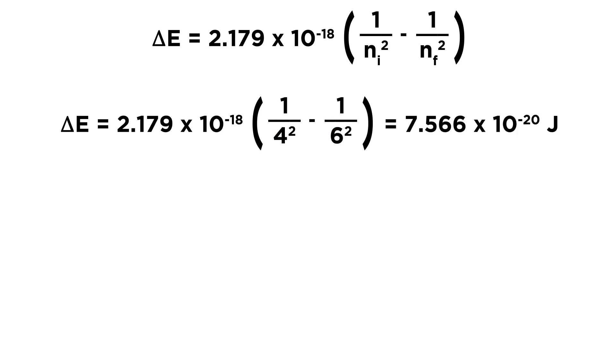If we do the arithmetic carefully, calculating what's inside the parentheses first, we get 7.566 × 10^-20 joules. That is the change in energy of the electron due to this transition.